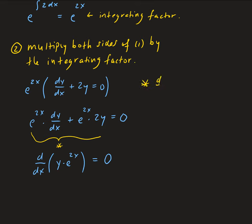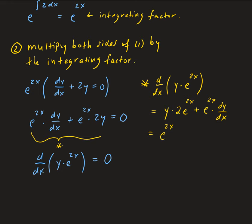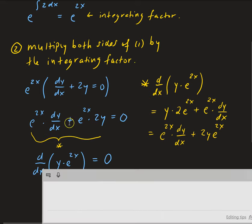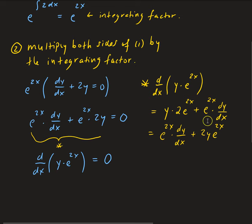Taking the derivative with respect to x of y times e to the 2x using the product rule: we take the first function y times the derivative of the second, which gives 2e to the 2x, plus the second function e to the 2x times the derivative of the first, dy/dx. Rearranging, we get e to the 2x times dy/dx plus 2y e to the 2x — the same as what we had. So this matches, confirming our expression.